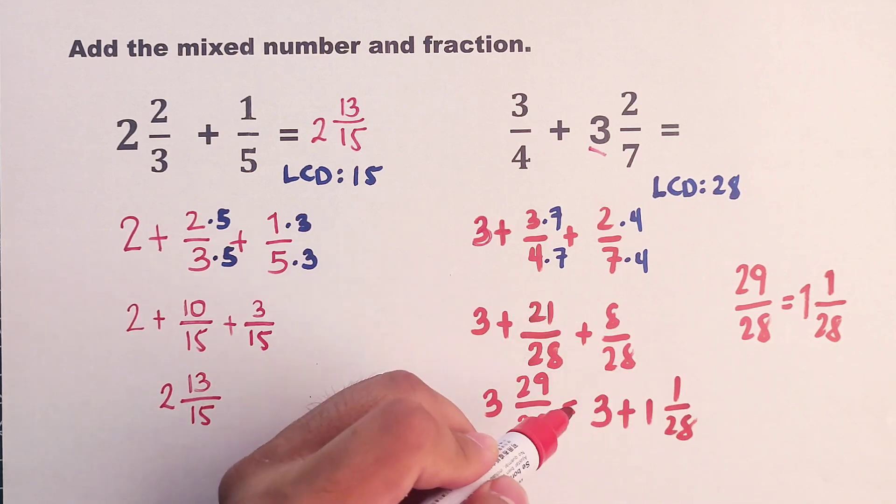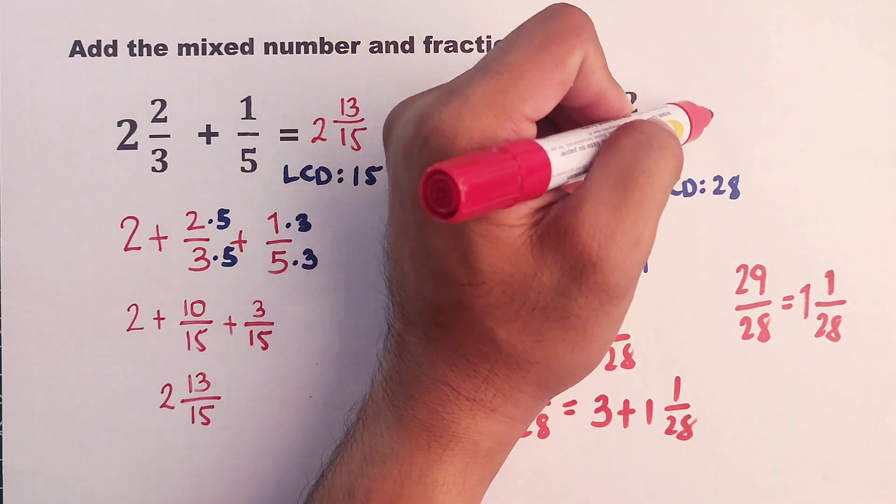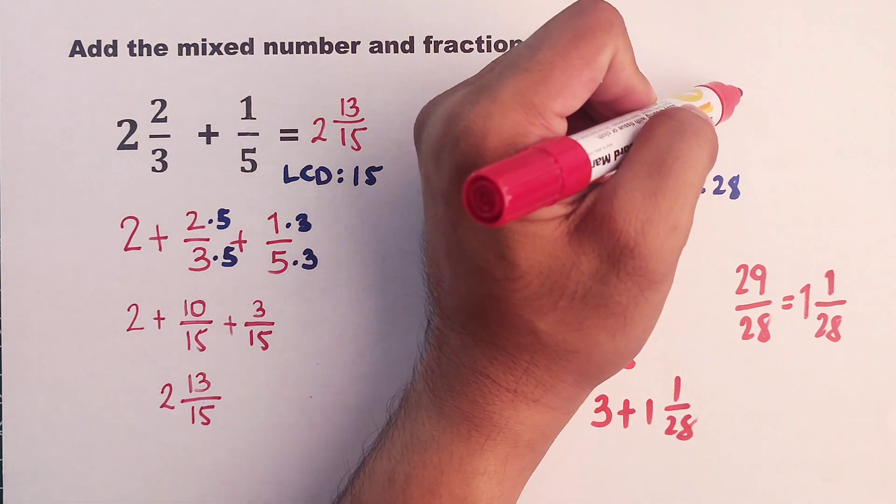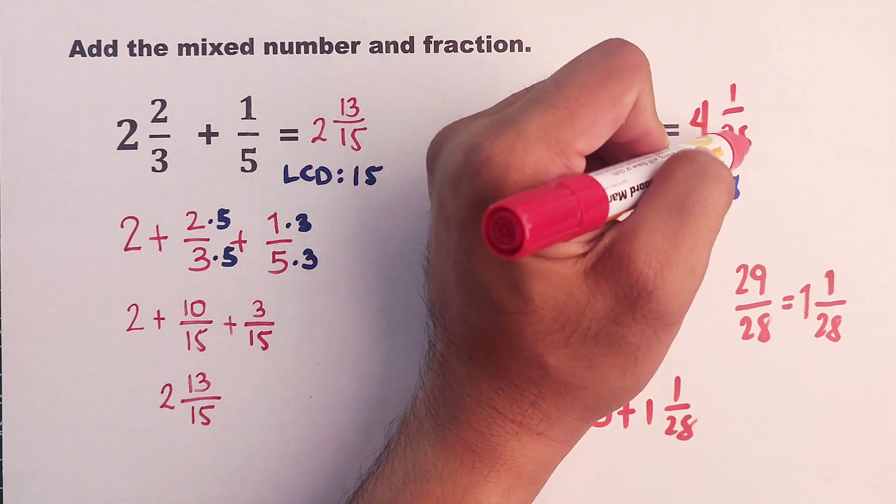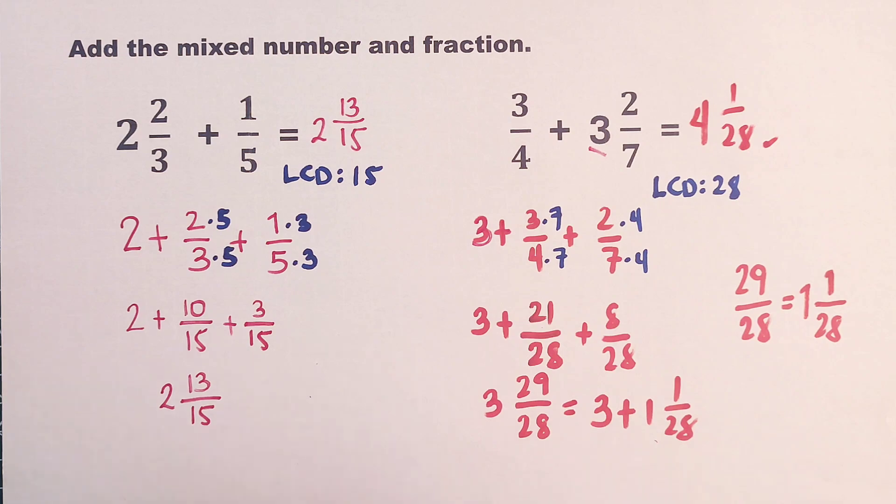We can add the whole numbers, 3 plus 1, that is equal to 4. Then copy your fraction 1 over 28. And as you can see, this is the answer.